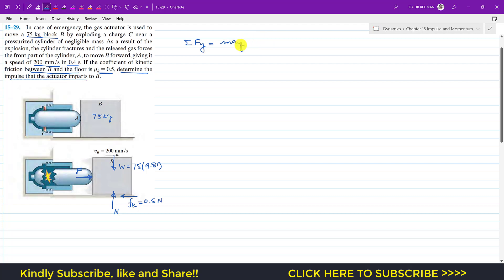It equals m times ay. As we can see, the block is only moving in the x direction, so acceleration in the y direction is 0. This is the positive direction. N is acting in the positive y direction, so I will write plus N minus the weight which is 75 into 9.81.